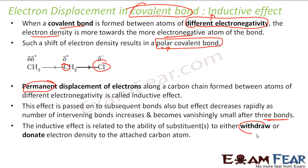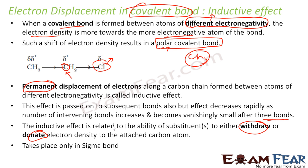There can be groups that either withdraw or donate electrons. In this case, chlorine is withdrawing electrons and carbon gets a partial positive charge. There can also be a group which donates electrons to carbon, giving carbon a partial negative charge — for example, a methyl group is an electron-donating group. Note that this happens only in sigma bonds; the pi bond is not involved.